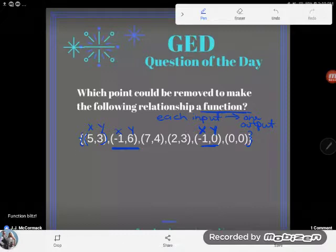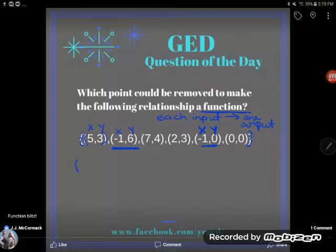So if I were going to want to make this into a function I would need to remove at least one of these points. So there's two possible answers to this question: you could answer that you would remove the point (-1, 6).